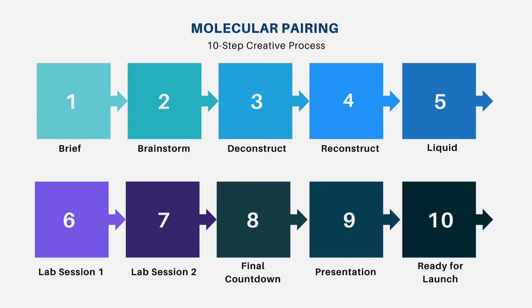As you can see here: Number 1 is the brief, Number 2 is brainstorming, Number 3 is deconstruct, Number 4 is reconstruct, Number 5 is the liquid, Number 6 is lab session number one, Number 7 is lab session number two, Number 8 is the final countdown, Number 9 is presentation, and Number 10 is ready for launch. I'll go through all of these now and explore each element as we go.